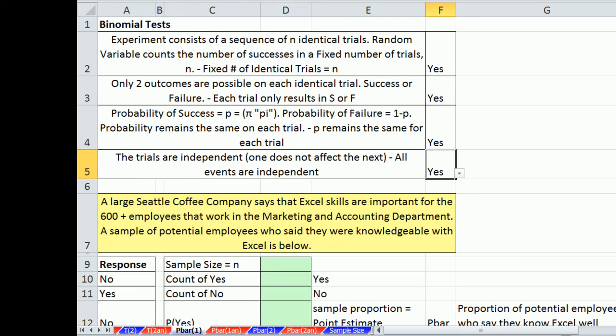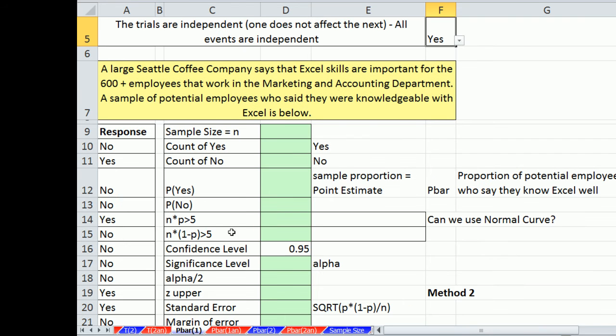Now, there is actually one further test. We're going to have to check whether n times p is greater than 5 and n times 1 minus p is greater than 5. But both of those are true. Then we can use the normal.